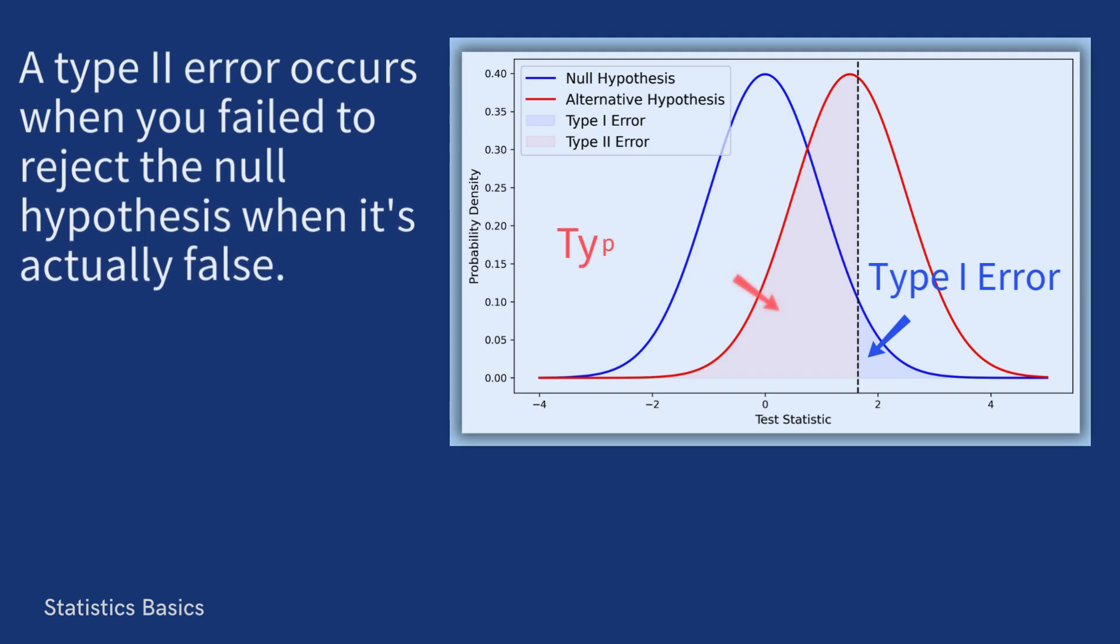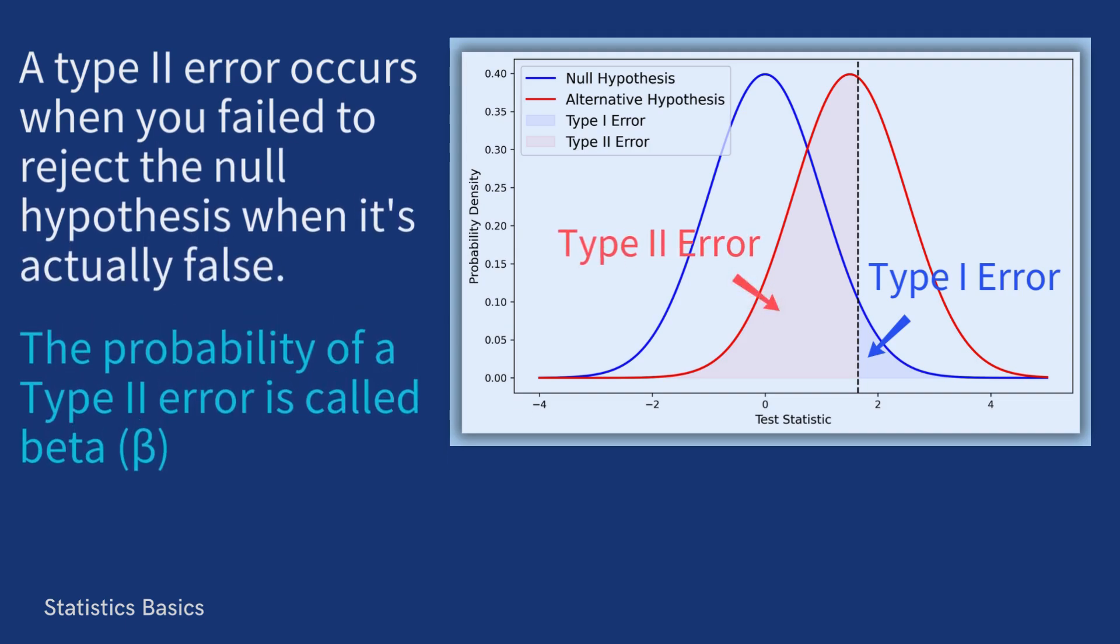A type 2 error occurs when you failed to reject the null hypothesis when it's actually false. This means you concluded that the drug doesn't work when it actually does. This could prevent a potentially life-saving treatment from reaching patients.